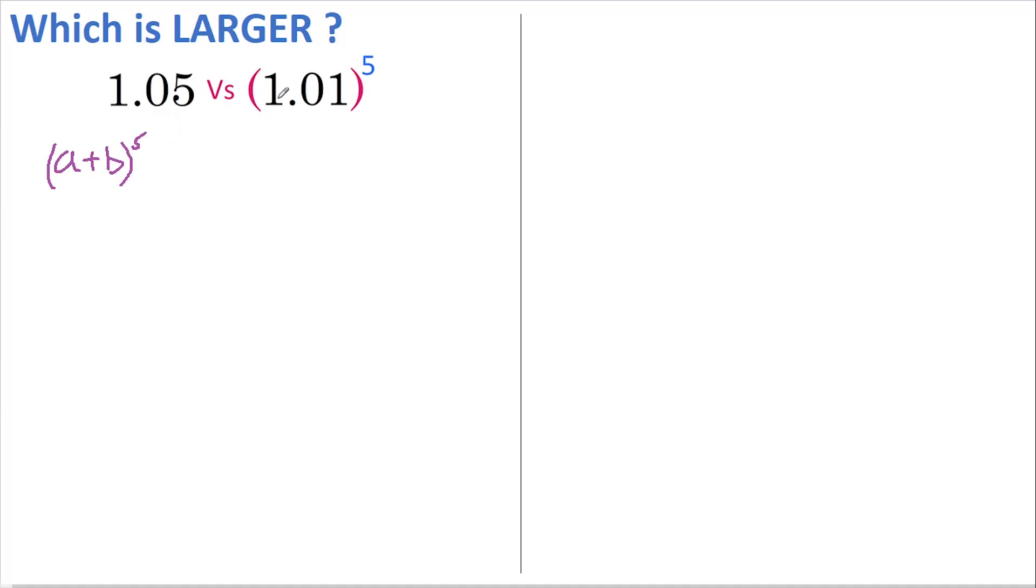a equals 1 and b equals 0.01. But first, in order to do this, we're going to need to know what the expansion of a plus b to the power of 5 is, and this is how I do it.